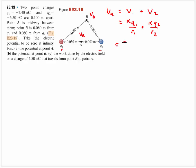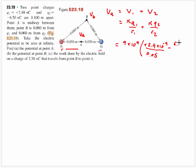That's going to be equal to 9 times 10 to the 9th. Charge 1 is positive 2.4 times 10 to the negative 9th divided by radius 0.05 meters. Charge 2 is negative, so we write minus 6.5 times 10 to the negative 9th divided by 0.05 meters. The voltage at A works out to be negative 738 volts.